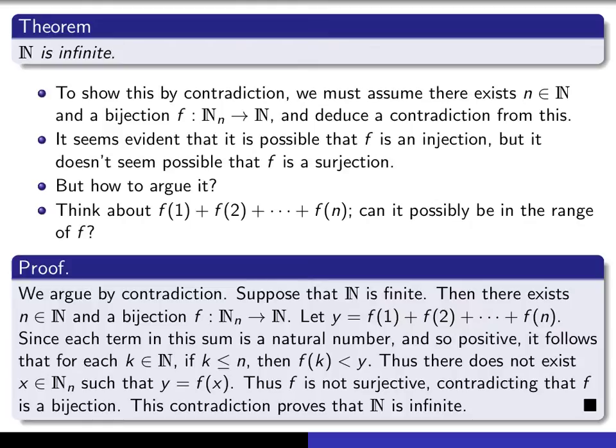So that says you cannot find an x in your domain equal to this particular y in your codomain, and therefore f is not surjective, and that contradicts the fact that f is supposed to be a bijection. Therefore we've proved that ℕ is infinite.